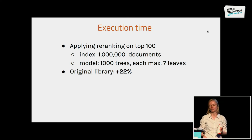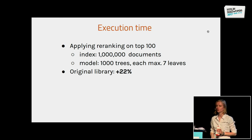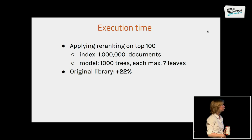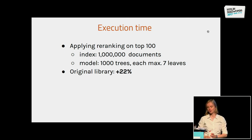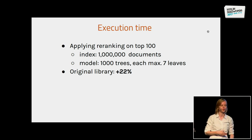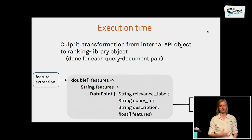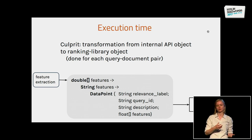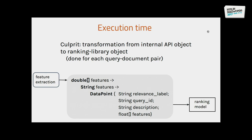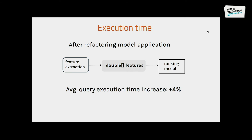Briefly on execution time: we tested it by applying re-ranking on the top 100 documents with a million documents, and our model had around 1,000 trees each with maximum seven leaves. Using the RankLib library, we initially got an increase of 22% in average query execution time, which was a few hundred milliseconds. But this was basically only due to translation of the API object — by default RankLib expects a string of features which it internally parses into a data point object. Once we removed this overhead, we only got an execution time increase of 4%, just a few tens of milliseconds, which is really minimal.